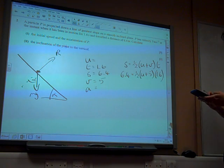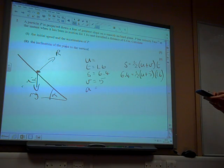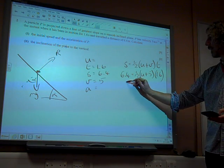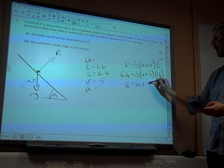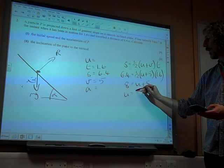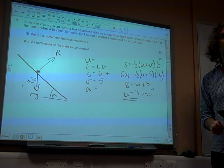So this is going to give us... 6.4 times 2 divided by 1.6 is 8. 8 is U plus 5. So U would be 3 metres per second.